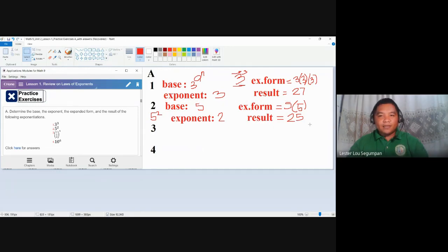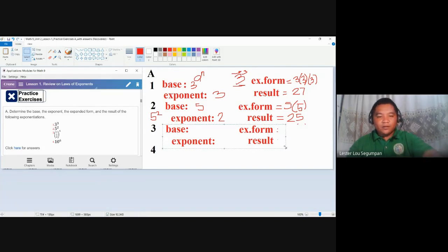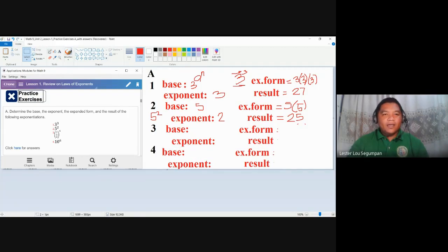For number three, let's delete this first, delete this here as well, and this one. And let me copy the same for number four. For number three, the given is one half raised to the power of five. Our base here is a fraction form, one half. Our exponent is five. The expanded form of number three looks like one half multiplied to itself five times. So you have one half times one half times one half times another one half, and finally, multiplied to another one half.